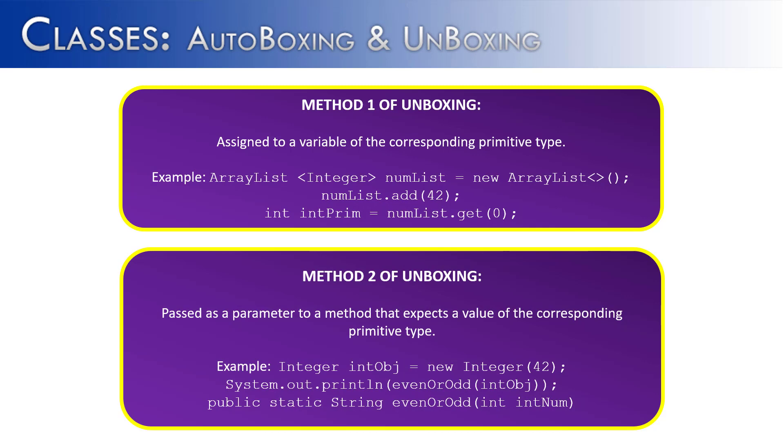The second method of unboxing is as a parameter. And we saw this when we were calling the method oddOrEven. Because we are passing an integer object, but the method requires a primitive, Java is okay with this, will automatically unbox it for us. And so the second method of unboxing is passing as a parameter. Two methods of unboxing, assignment and passing as a parameter.